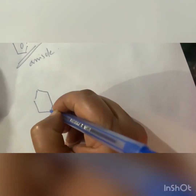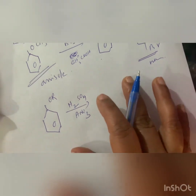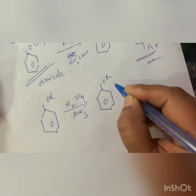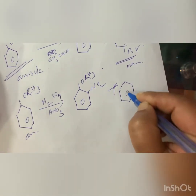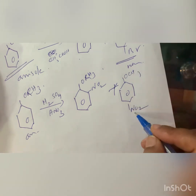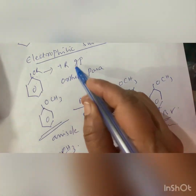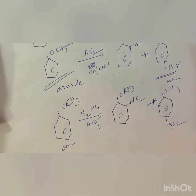Nitration is another electrophilic substitution. For nitration, the nitrating mixture is H₂SO₄ and HNO₃, which introduces the NO₂ group. Since OR is ortho-para directing, the NO₂ group enters the ortho and para positions of anisole. Products are ortho-nitroanisole and para-nitroanisole, with para-nitroanisole being the major product.